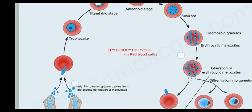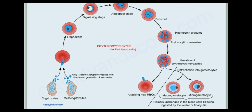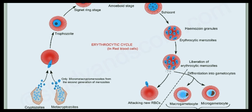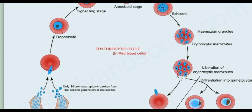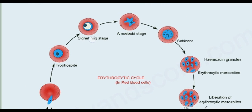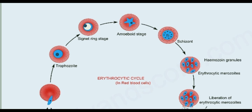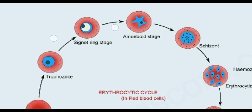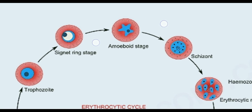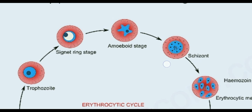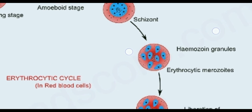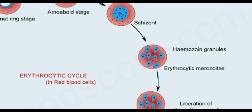In the erythrocytic cycle, micro metakryptomerozoites from the second generation invade RBCs, feed on hemoglobin, and form a feeding stage called trophozoite. A vacuole forms, pushing the nucleus to the periphery, creating a ring-like structure called the signet ring stage. An irregular amoeba-like structure then forms, followed by a schizont, and finally haemozoin granules formed from the haematin of hemoglobin — these are responsible for the fever during malaria.